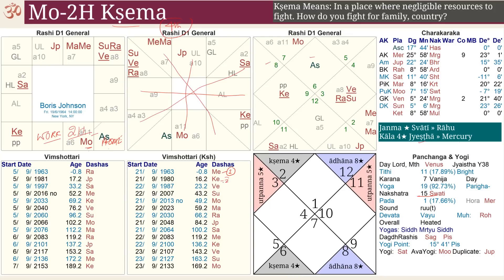I am numbering the Dashas — you should number the Dashas because then we know which Dasha is running right now. From Mercury to Saturn are the nine Vimshottari Dashas. The current Dasha is that of the Moon, which is the 11th lord in the second house, and the Moon Dasha is about to finish in September 2023, after which Mars Dasha is going to come. A major change is waiting to happen in his life from 59 years of age.